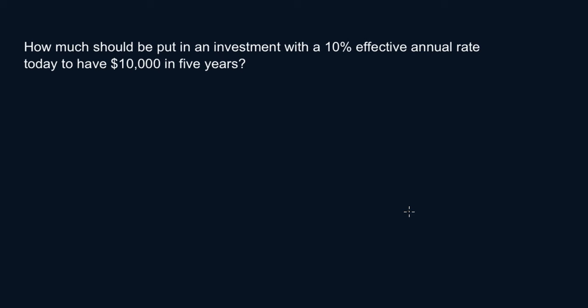So how much should be put in an investment with a 10% effective annual rate to have $10,000 in five years? So first of all, what you got to do is identify what the question is asking. So $10,000, that's the future value. So that's your F, that's your final value. So the question is asking for the present value.